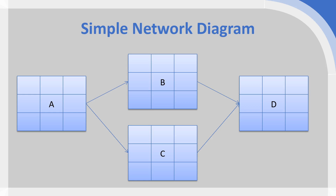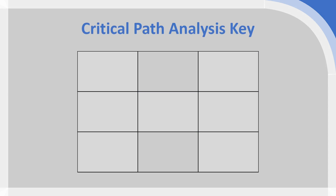This is where critical path analysis often seems intimidating, but it is relatively simple maths — just a matter of wrapping your head around it. If we take a square and make it larger, at the middle of the square we have the activity code itself — the unique activity code from our activity list. To the right, in the middle-right square, we place the duration of that particular activity, which in this case is in days, but could be in hours or weeks depending on how large your project is.